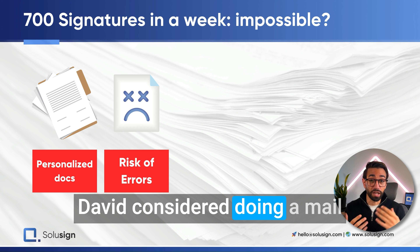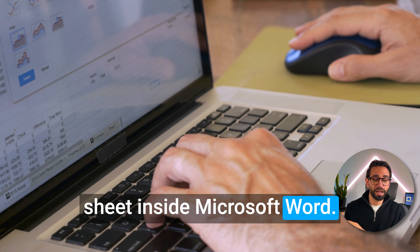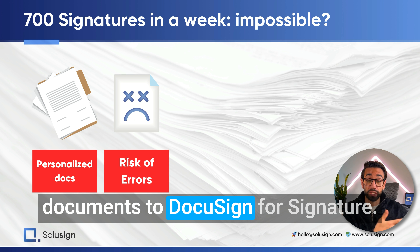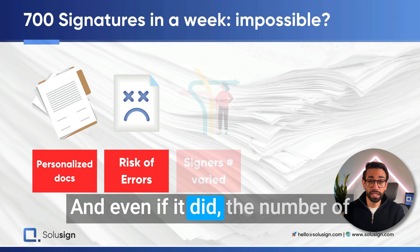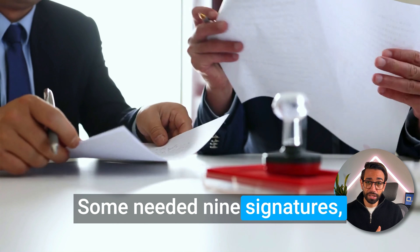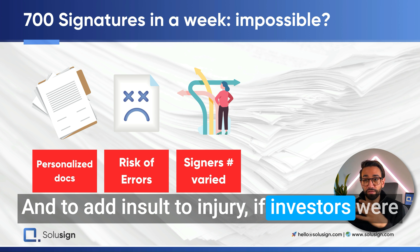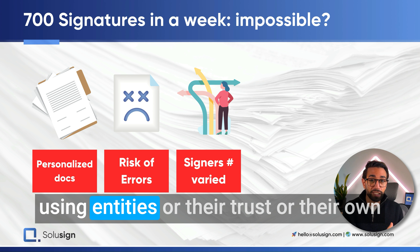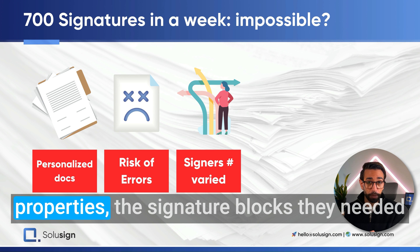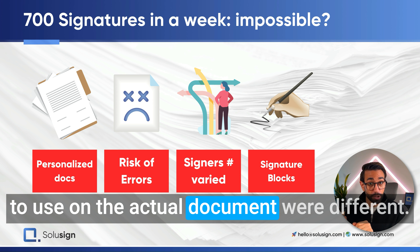David considered doing a mail merge by importing an Excel sheet inside Microsoft Word, but the challenge is that Microsoft Word doesn't bulk upload documents to DocuSign for signature. And even if it did, the number of signers for each document varied — some needed nine signatures, some needed 13 signatures.